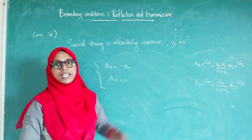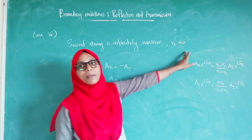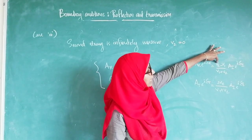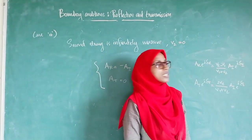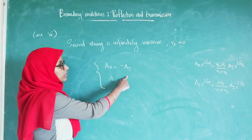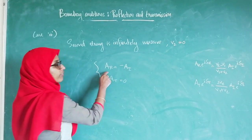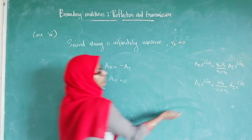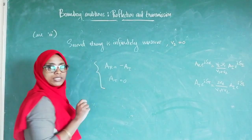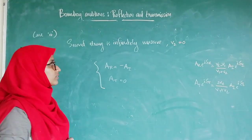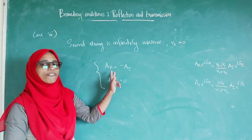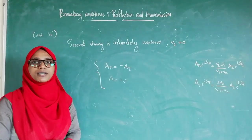In the third case, the second string is infinitely massive. Then V2 will be 0. Substituting V2=0 in the amplitude equations gives A_R equals minus A_I, meaning the total incident wave is reflected back with a phase reversal. Also, A_T equals 0, meaning there will be no transmitted wave. So when the second string is infinitely massive, the total wave incident on the node will be reflected back and there will be no transmitted wave component.